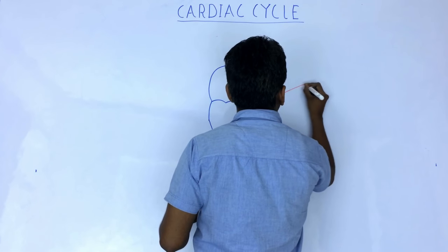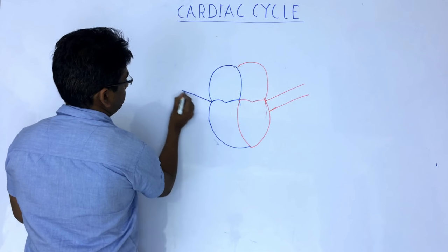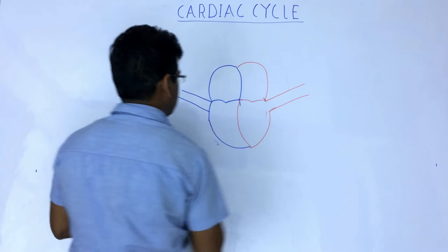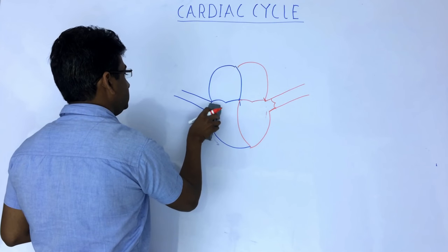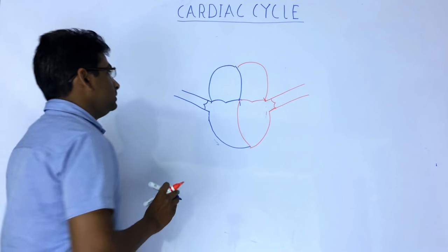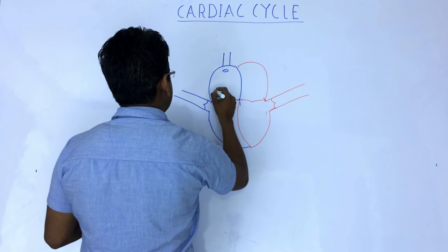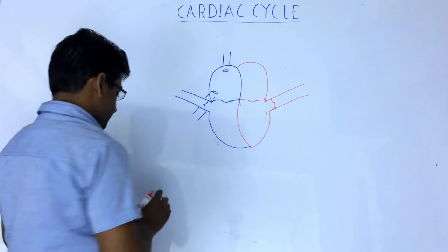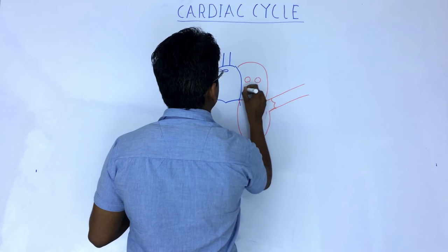From the left ventricle arises the aorta, and from the right ventricle arises the pulmonary artery. In the aorta there is a semilunar valve, the aortic semilunar valve, while in the pulmonary artery there is the pulmonary semilunar valve. Two vessels drain into the right atria: the SVC, superior vena cava, and the IVC, inferior vena cava. Into the left atria, four pulmonary veins open.